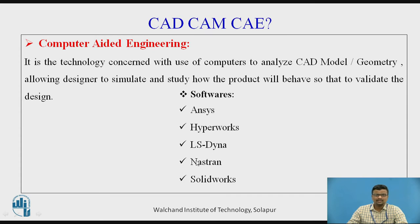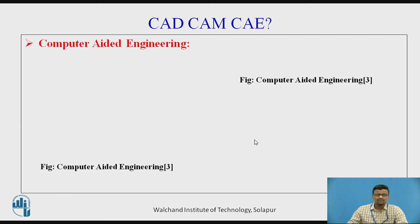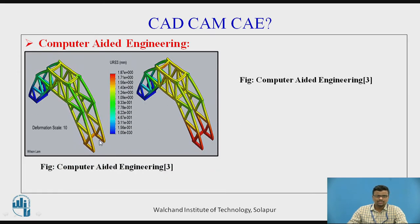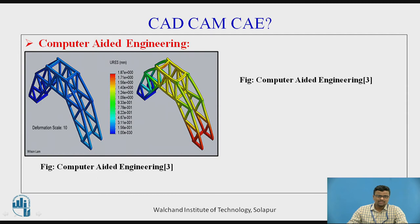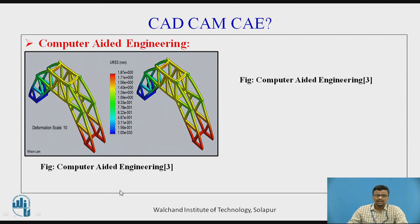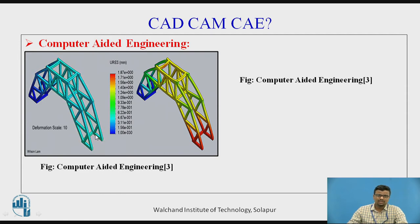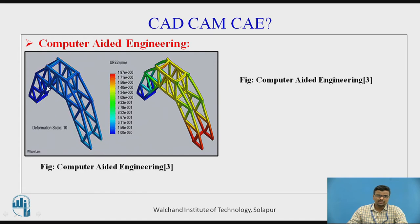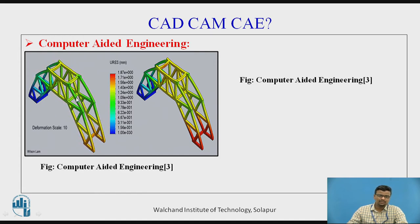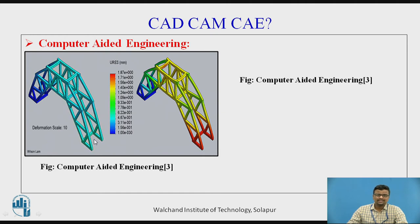There are also software options like LS-DYNA, Nastran, and SolidWorks. In a CAE application example, you can see a load applied in a particular direction and observe the color changing: if the load is below the limit, the color is green or blue; if the load exceeds the limit, the color is red.